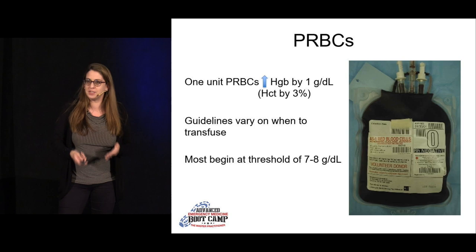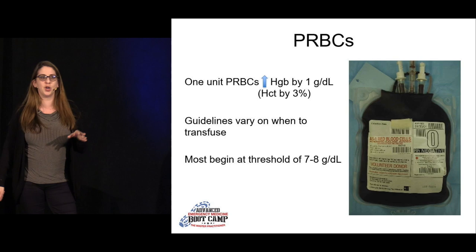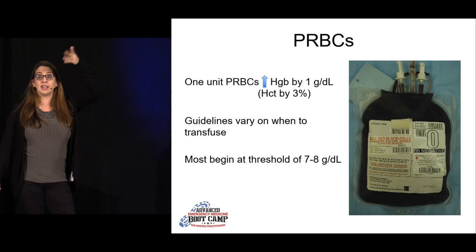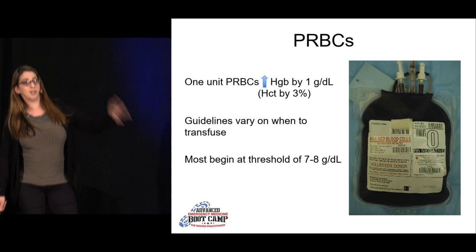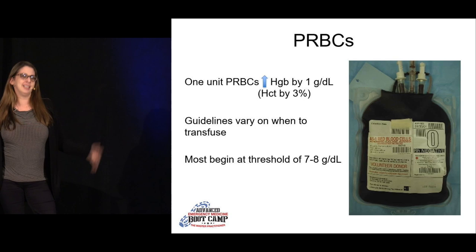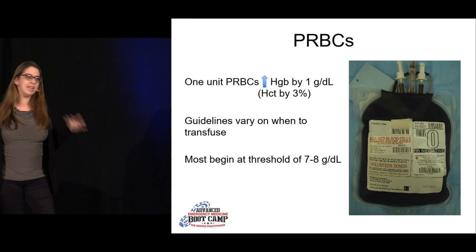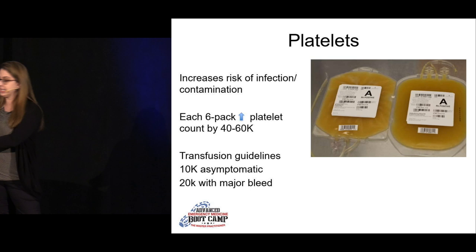We used to transfuse to a hemoglobin of 10, then 9, and we keep going down because we've realized that giving blood is not without harm — we do it when we have to. Many hospitals now have a policy to give one unit and then reassess rather than automatically ordering two. We transfuse to increase the patient's oxygen-carrying capacity.